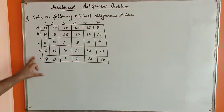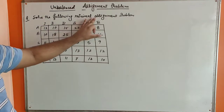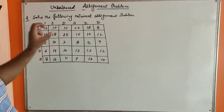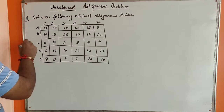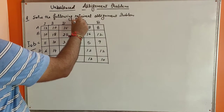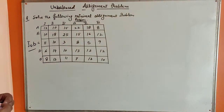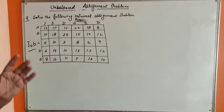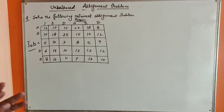In this problem, there are five jobs and six persons available. A, B, C, D, E are the jobs, and these are the persons. We have to assign each job to each person, and any person or any job cannot be unfilled.